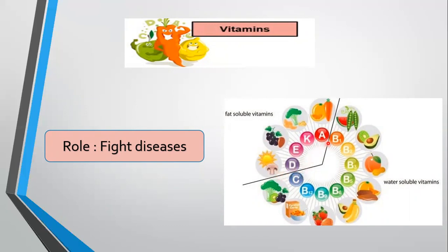Vitamins are known by the letters A, B, C, D, E and K. In fact, vitamin B complex is a group of vitamins. Some vitamins are soluble in water while other vitamins are soluble in fat. Each vitamin is found in a particular kind of food and has a specific function.